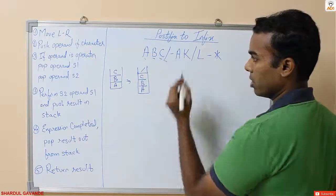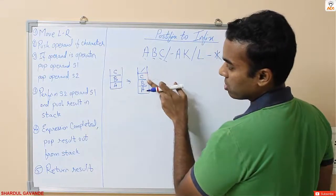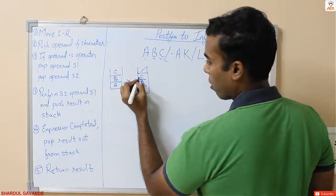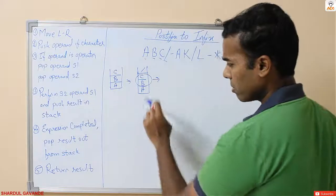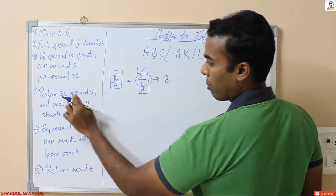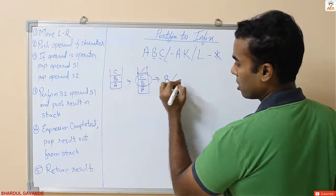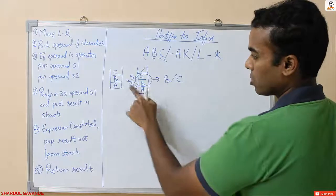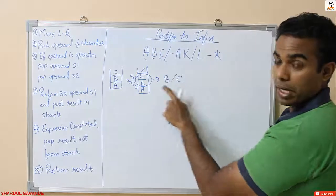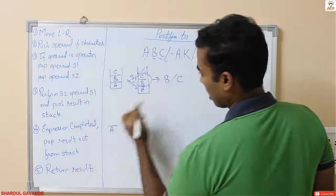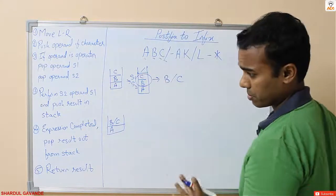Next I have a division operator. Since the operand is an operator, we pop operand s1 and operand s2. s1 is 'c' and s2 is 'b'. We perform s2 operand s1, which gives us 'b divided by c'. That's the third step — push the result back into the stack. The stack now contains 'a' and 'b/c'.